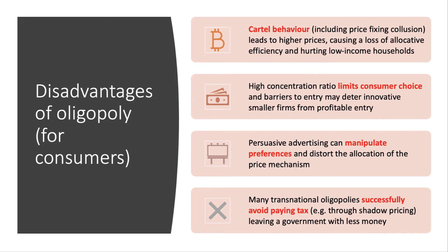The fourth disadvantage is that although many oligopolies make high profits — often operating transnationally across many markets and countries — lots of them don't actually pay much in tax, particularly if they avoid it through techniques such as shadow pricing. This means the government gets less money.